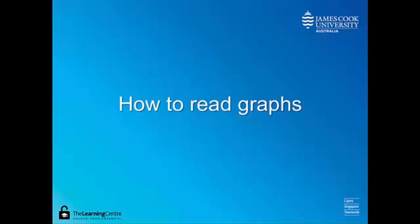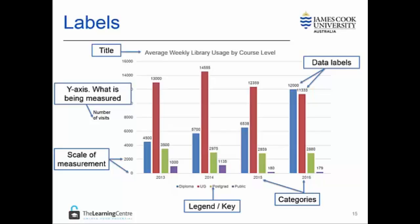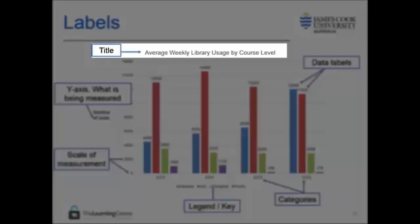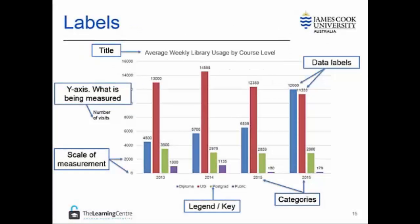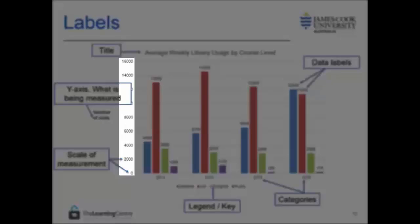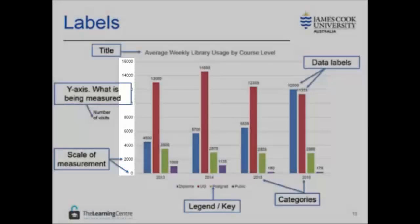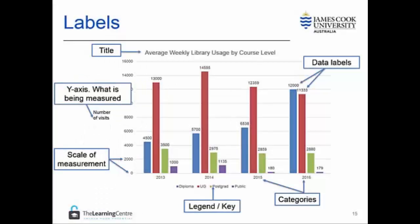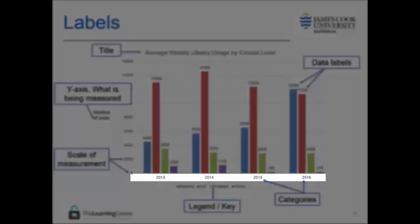How to read graphs. The first step is to identify what the graph is about. This information is in the title — here we have average weekly library usage by course level. The next step is to identify the scale used in the graph. In this graph we can see that each increment represents 2,000 visits to the library. Thirdly, we locate the information that is relevant to us. Note that time elements are usually on the x-axis and quantity is almost always on the y-axis.